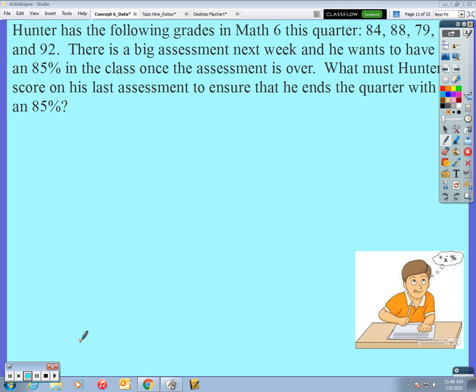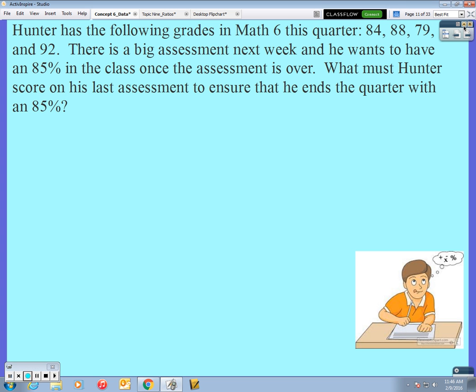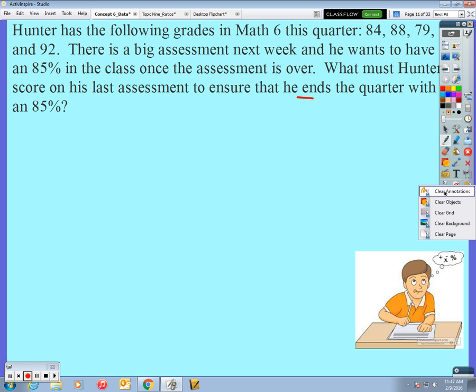So taking a look, it says Hunter has the following grades in Math 6 this quarter: 84, 88, 79, and 92. There's a big assessment next week, and he wants to have an 85% in the class once the assessment is over. What must Hunter score on his last assessment to ensure that he ends the quarter with an 85%?